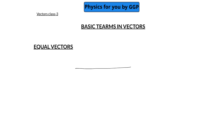If you are having a vector A which is towards right and another vector B, and these two vectors are having the same magnitude and the same direction, then we can say that vector A is equal to vector B. Two vectors are said to be equal if they have the same magnitude and same direction.